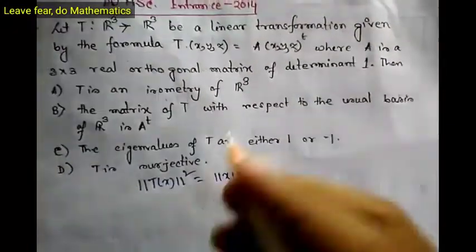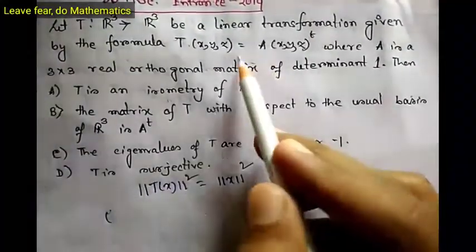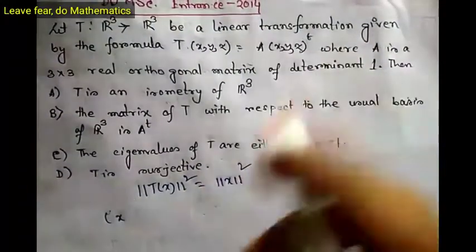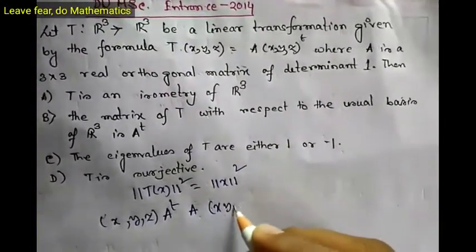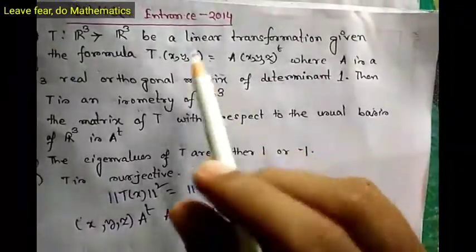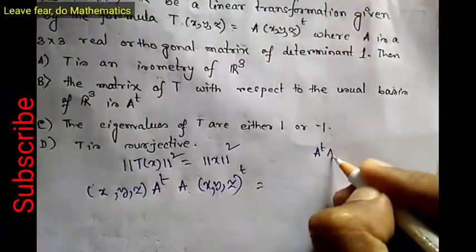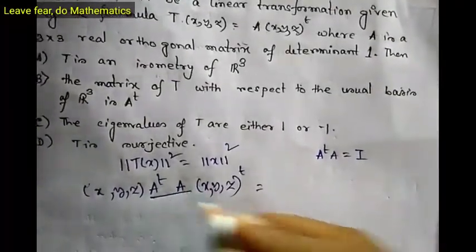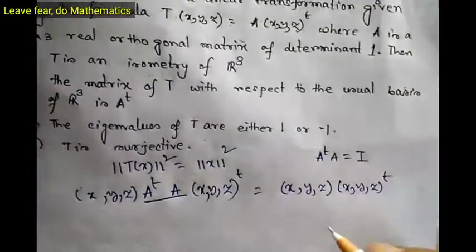We can square both sides. The norm of T(x) squared can be written as follows: since T of (x, y, z) is given as A times (x, y, z) transpose, we can write this as (x, y, z) times A transpose times A times (x, y, z) transpose. Since A is a 3×3 real orthogonal matrix, A transpose times A equals the identity matrix E.